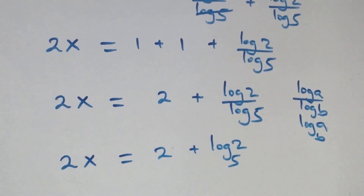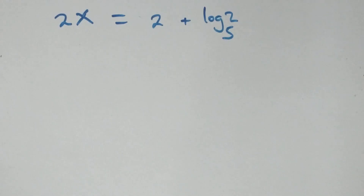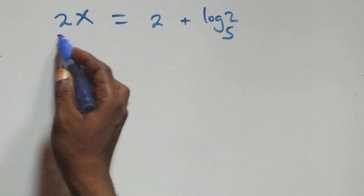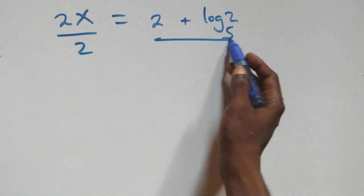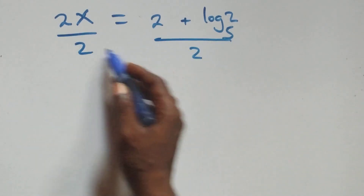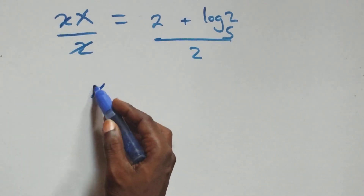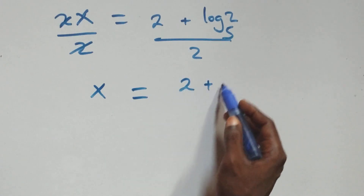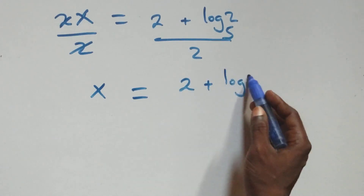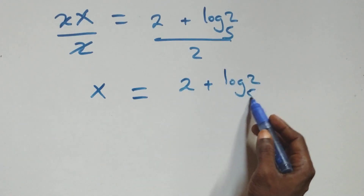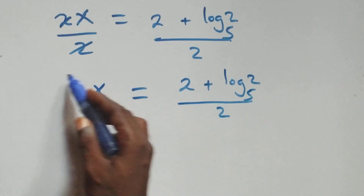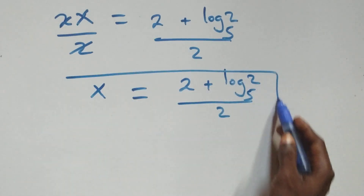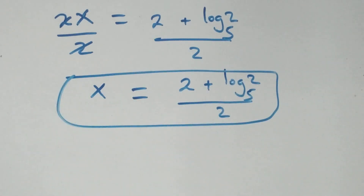Now we divide both sides by 2. Two cancels each other. This becomes x equals 2 plus log base 2 of 5, all over 2. That is the value of x: x equals 2 plus log base 2 of 5, all over 2.